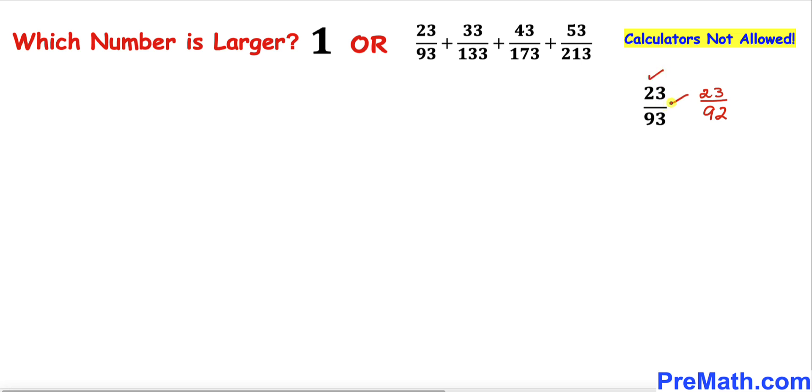Now let's focus on the next fraction. Similarly, I'm going to reduce this denominator by one. That means I can write 33 divided by 132. Obviously, 33/132 is going to be smaller than 33/133, so I'll put a less-than sign.